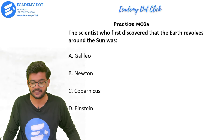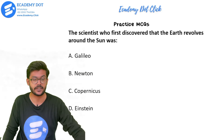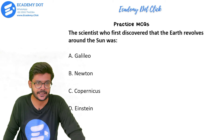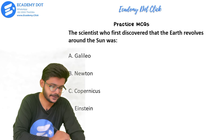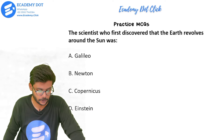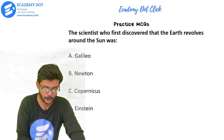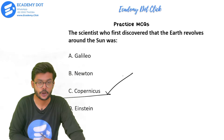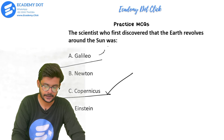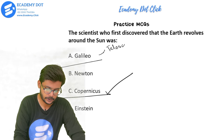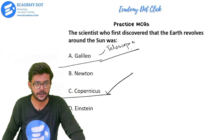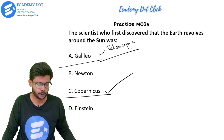The scientist who first discovered that the earth revolves around the sun — options are Galileo, Newton, Copernicus, or Einstein. The right answer is option C, that is Copernicus. Galileo's discovery was the telescope. Newton discovered gravitational force, and Einstein gave the theory of relativity and E=MC². The right answer is Copernicus.